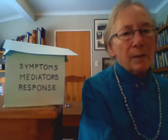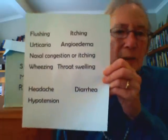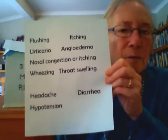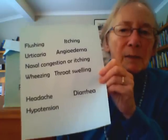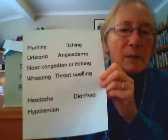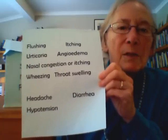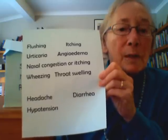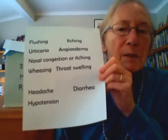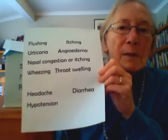Specifically, the skin symptoms that fit this first criterion are flushing, itching, urticaria (which is hives), and angioedema (which is localized swelling). The respiratory symptoms most commonly associated with mast cell mediator release are nasal congestion, nasal itching, wheezing, and throat swelling. Other miscellaneous symptoms that fit this criterion are headache, hypotension, and diarrhea.